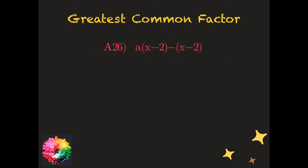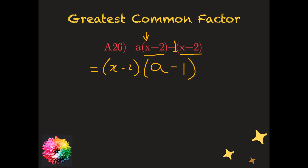Next is question 26 in Part A, which is a binomial common factor question. I can see that I have two identical binomials in brackets, so x − 2 is common between both terms and I factor that out. I then ask: x − 2 times what gives the first term? The answer is A. And x − 2 times what gives the second term? There's a negative 1 there, so it's minus 1. Final answer: (x − 2)(A − 1).